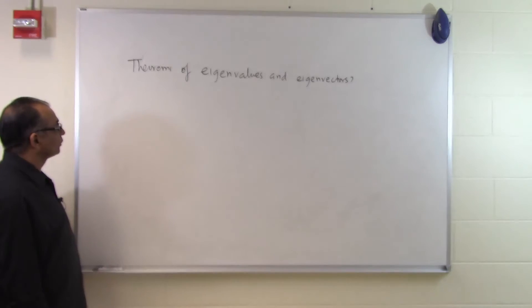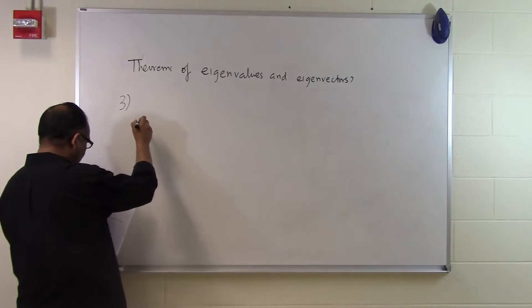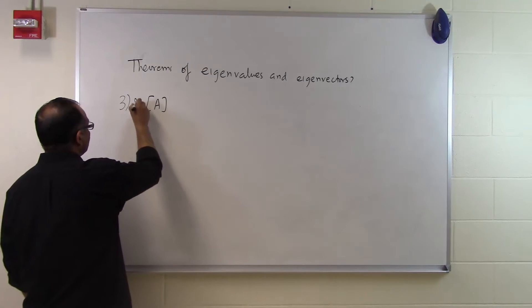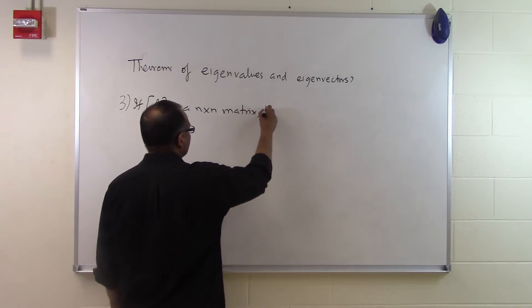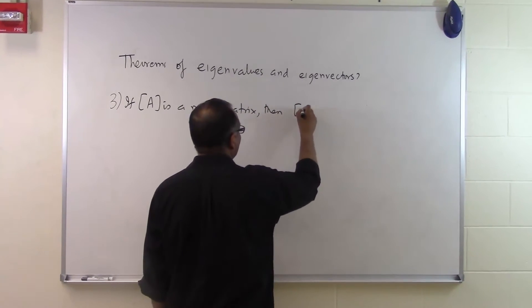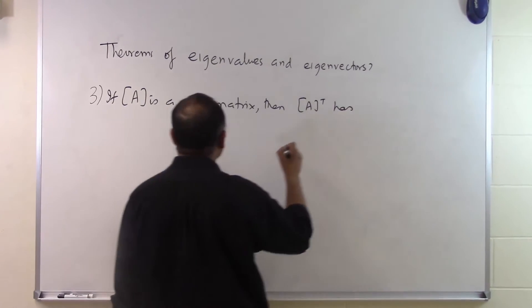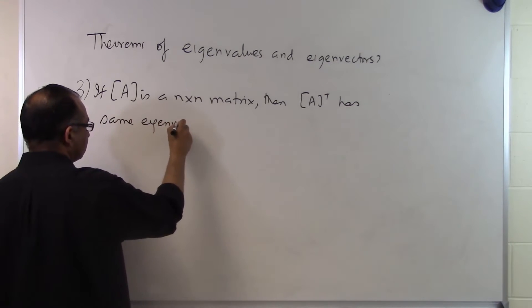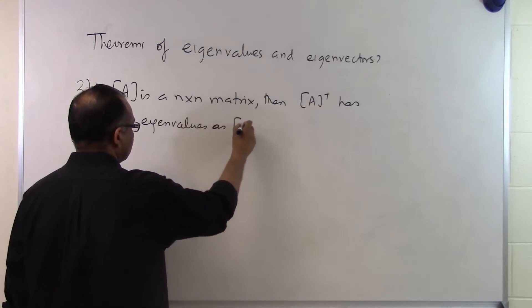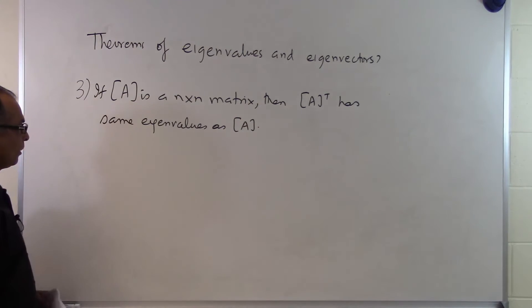In this segment we are talking about some of the theorems corresponding to eigenvalues and eigenvectors. One of the theorems says as follows: if A is an n by n matrix, meaning A is a square matrix, then A transpose has same eigenvalues as A. What that basically means is that if you have a square matrix and you are able to find its eigenvalues, then if you take its transpose, it has the same eigenvalues as the A matrix.